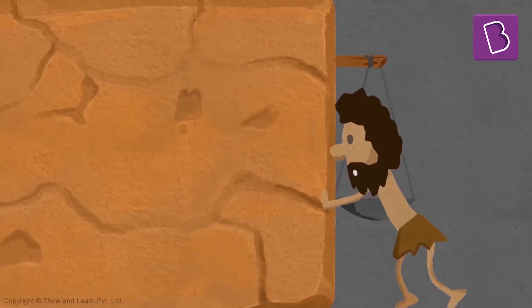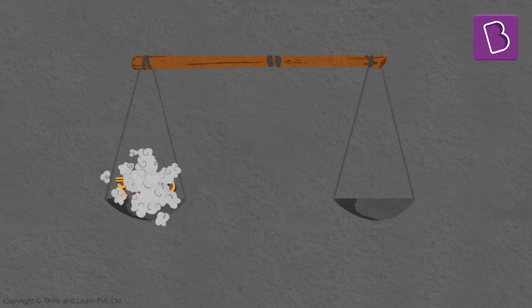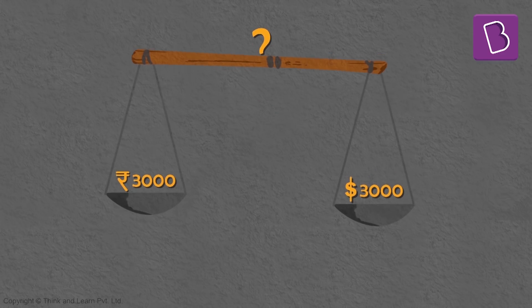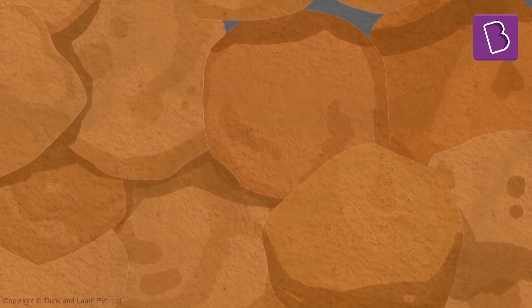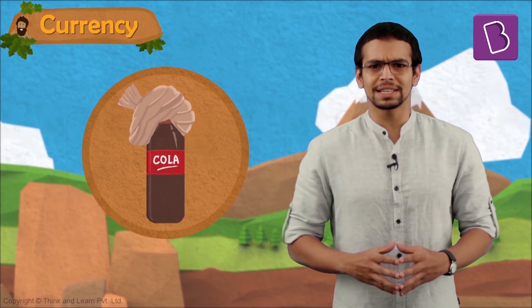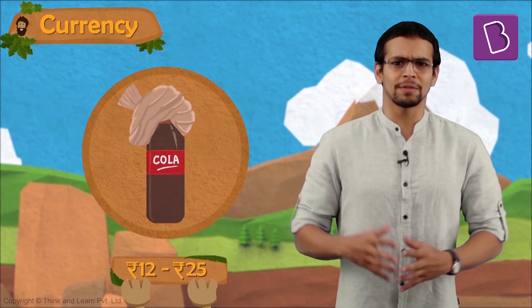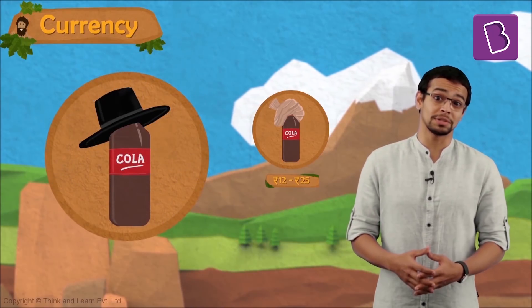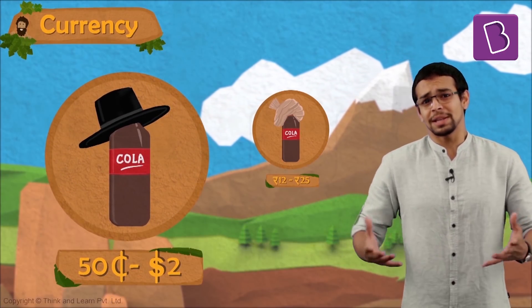It used to be very confusing for me at a point in time. Simple question: if I had 3000 rupees and a friend of mine had 3000 dollars, which one of us had more money? There is some relationship between them which makes 3000 rupees and 3000 dollars different from one another. Let's say a bottle of juice or cola — how much would that cost in India? As of 2010–2016, it costs about 12 to 25 rupees, depending on where you buy it. In the US, a bottle of cola might cost about 50 cents or 2 dollars, depending on where you buy it.